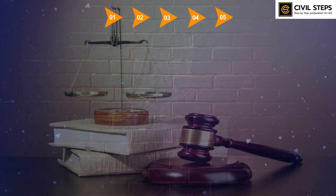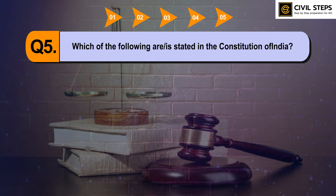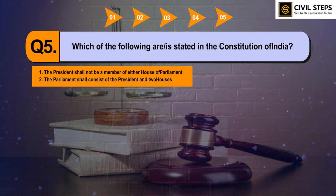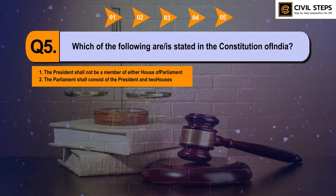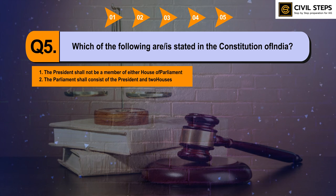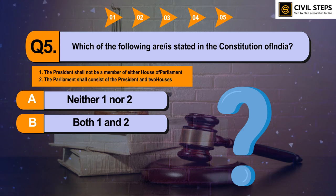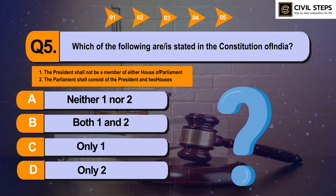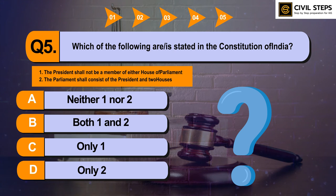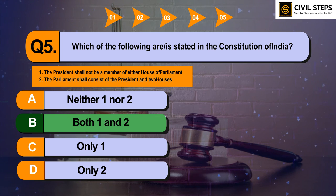Question number five: which of the following are stated in the Constitution of India? First, the President shall not be a member of either House of Parliament. Second, the Parliament shall consist of the President and two Houses. Option A: neither one nor two. Option B: both one and two. Option C: only one. Option D: only two. The answer is Option B: both one and two.